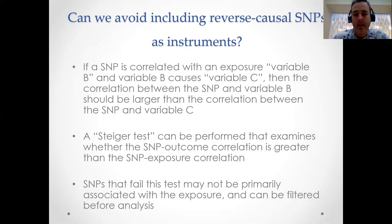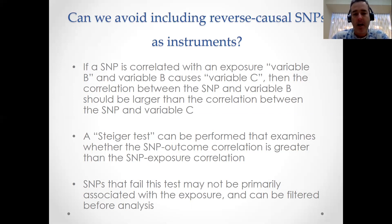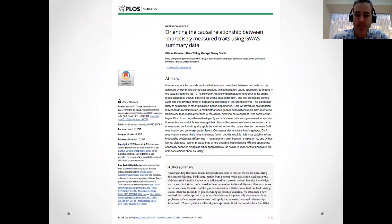The Steiger test will examine whether the SNP–outcome correlation is greater than the SNP–exposure correlation. If that's the case, SNPs that fail the test may not be primarily associated with the exposure, and so you can filter them out before your analysis. The Steiger method is outlined in a paper in PLOS Genetics by Jib Hamani from 2017.